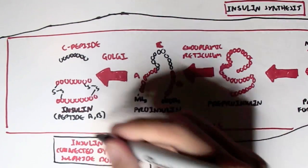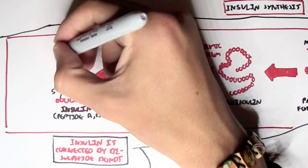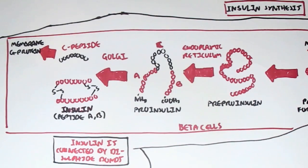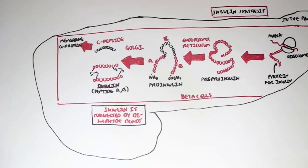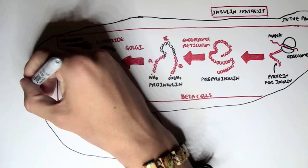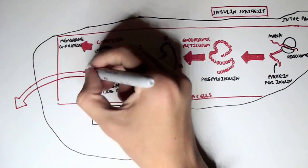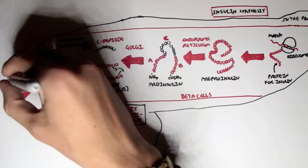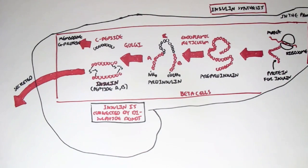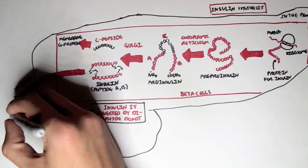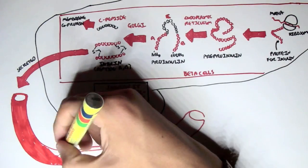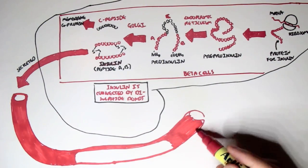The A and B peptides are bounded together by disulfide bonds — this is what insulin is. The C peptide has a role in the cell membrane for G protein signaling in some way. This insulin can then be secreted into the bloodstream where it will travel to its target tissue or associated organs.